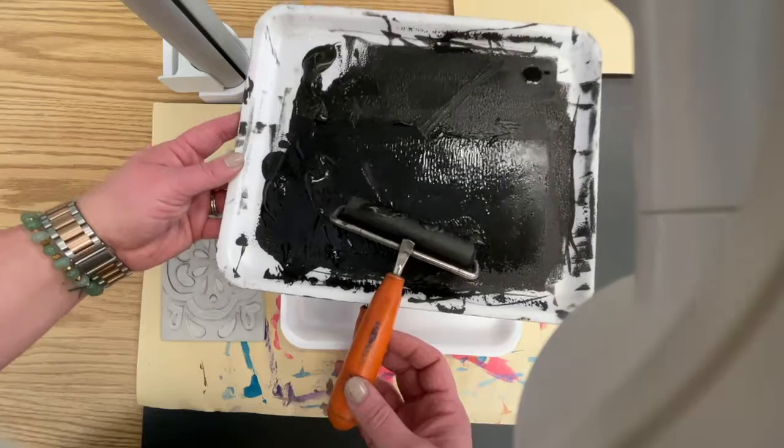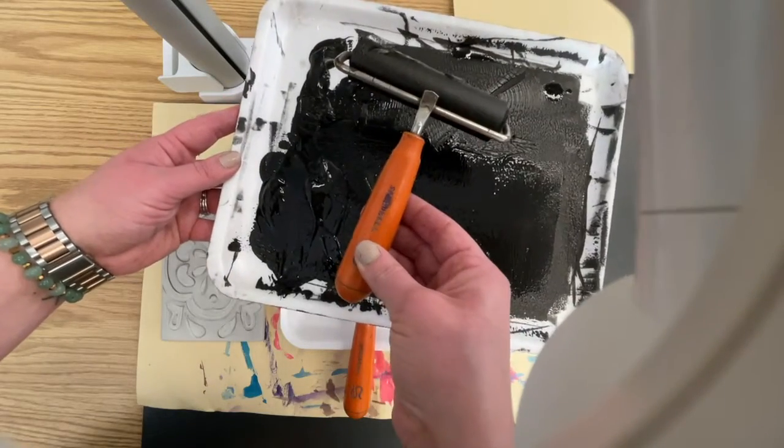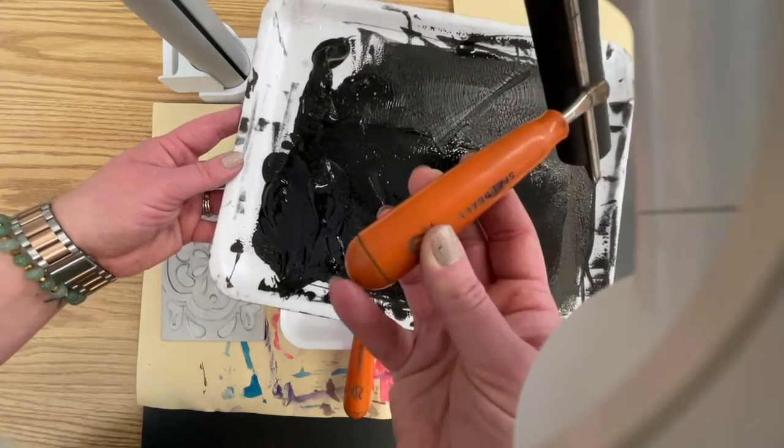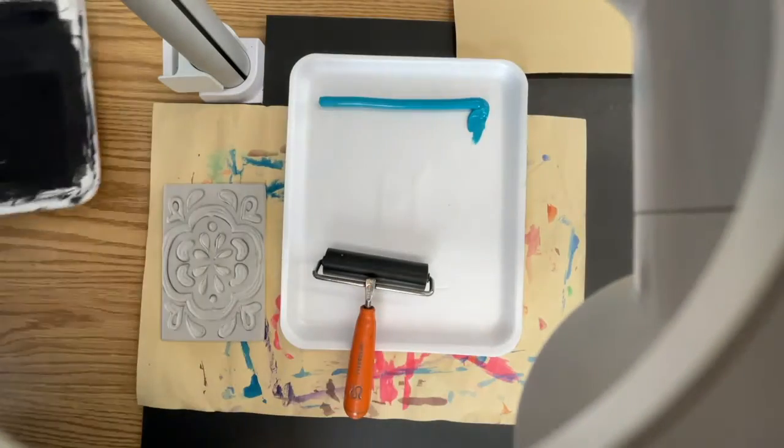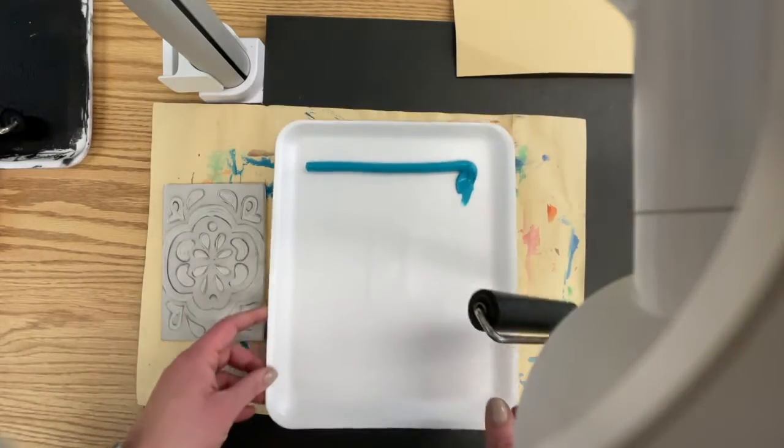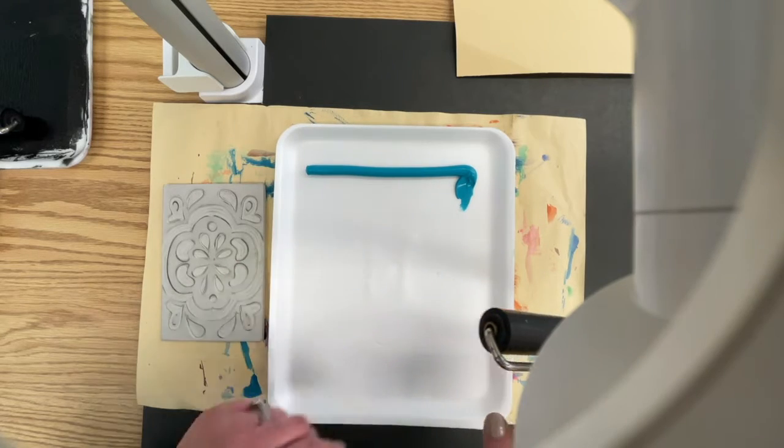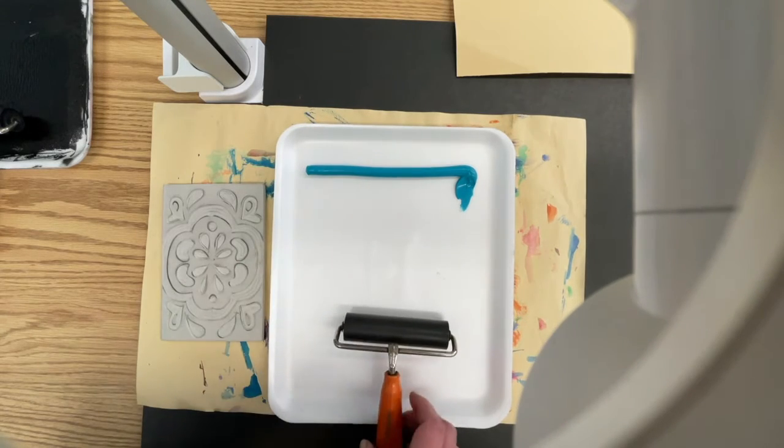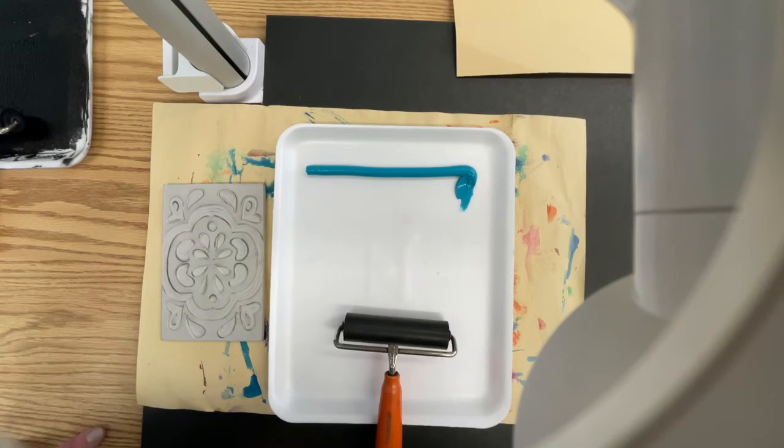This is what your tray is going to eventually look like. If I leave it with my handle sticking inside there, I'm going to get ink all over the bottom of the handle, so have it sitting to the side. Let's talk about inks real quick. Inks are water soluble, which means that they can get cleaned up with water. They're a heavy body, which means that they're really thick.